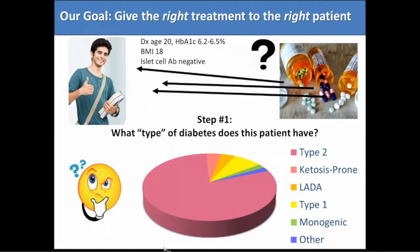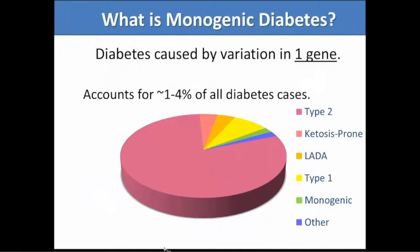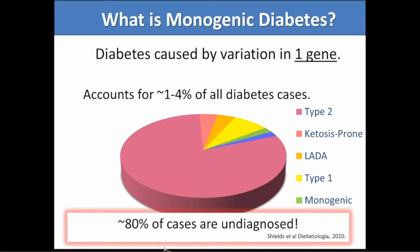Thinking about what kind of diabetes this patient might have: it could be type 2 — that's our default — but it's not likely ketosis-prone since he never had ketoacidosis, and he had negative antibodies so probably not LADA or type 1. That leaves the possibility of monogenic diabetes. Monogenic diabetes is caused by a genetic mutation in one gene, accounting for about 1–4% of all diabetes. It's not truly rare, but about 80% of cases are undiagnosed and often not recognized.